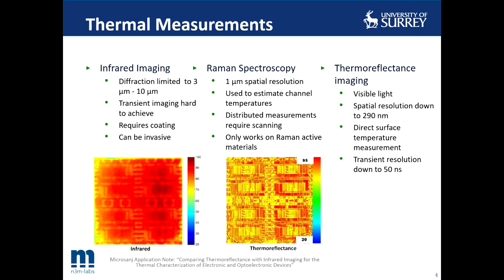In order to understand the benefits of the thermal reflectance system, I will compare it with infrared imaging and Raman spectroscopy. Infrared imaging is the most popular thermal measurement technique, using an infrared-sensitive camera to record the intensity of the thermal radiation emitted by the device under test. However, due to the infrared wavelength and diffraction limit, infrared imaging has a limited spatial resolution ranging between 3 and 10 micrometers. On top of that, an IR-opaque coating with high emissivity is usually required, which can affect the characteristics of the device and impair its performance.